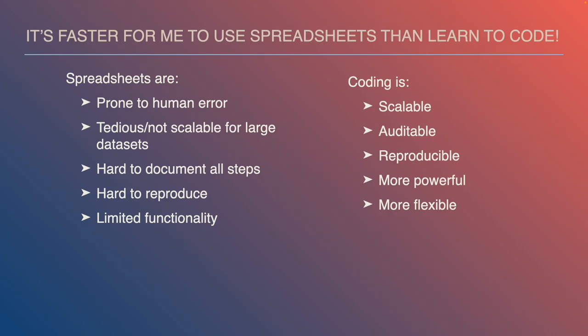Using coding for data science is scalable — it doesn't matter if you have one dataset or a thousand, you can repeat the process. Computers are good at those kinds of repetitive tasks. It's auditable, meaning anybody who knows the programming language can understand what happened. It's reproducible — every time you run a program you get the same results given the same data. It's more powerful because you can do a lot more with it, and it's more flexible because of the many tools available.